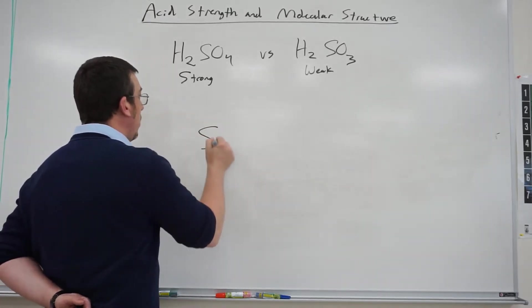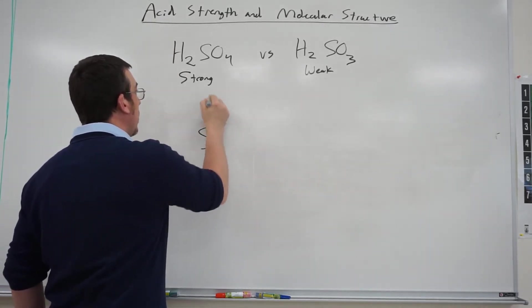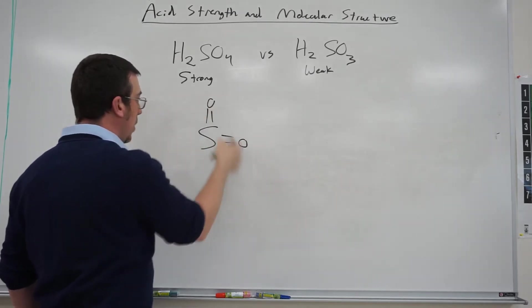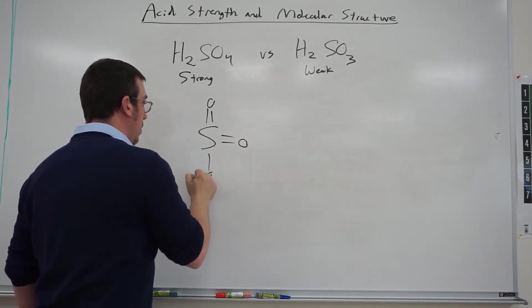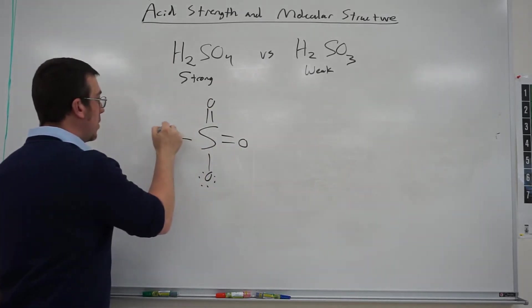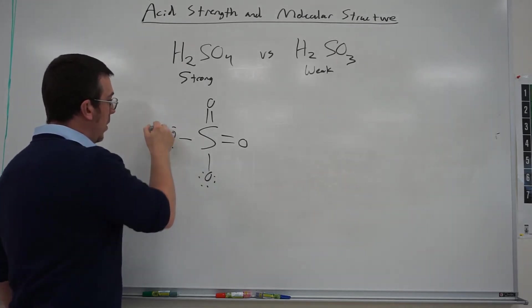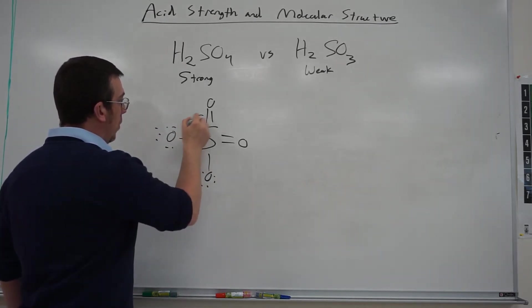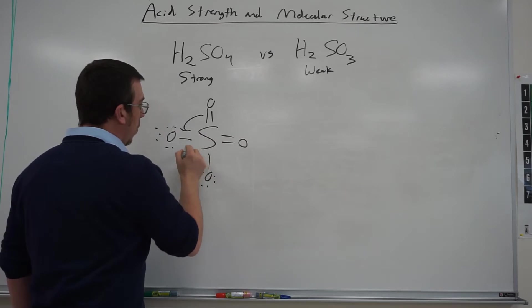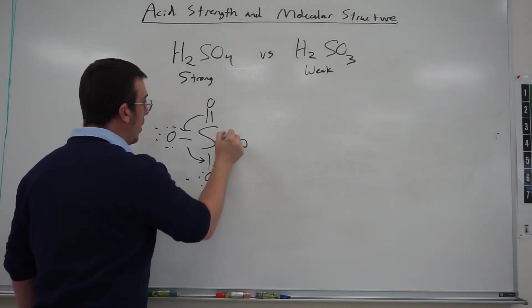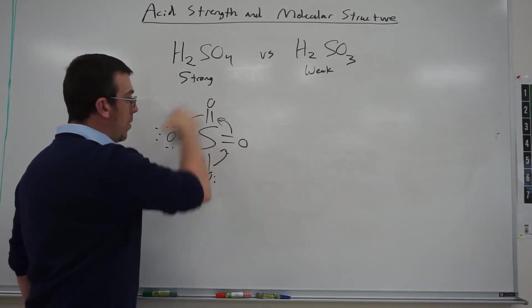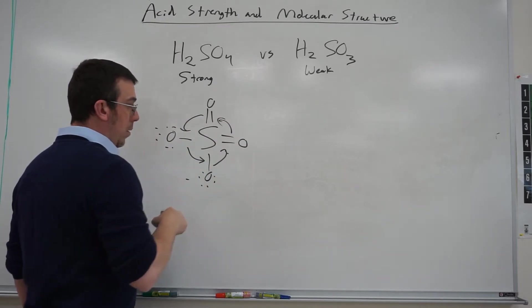So if we take, for example, sulfate. Sulfate has two options of double bonded, and then you're going to have the other two options which have these negative charges. So the resonance structure forms when these double bonds are able to rotate around its structure.